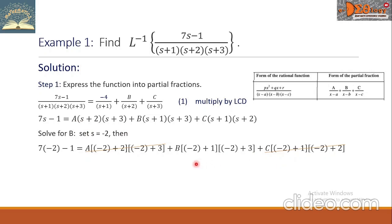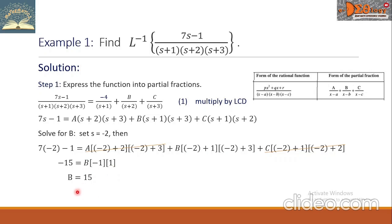Let us simplify the equation. The left side becomes negative 15. For b, we have b times negative 1 times positive 1. Solving for b, it is equal to positive 15. Let's substitute this value of b into equation 1.